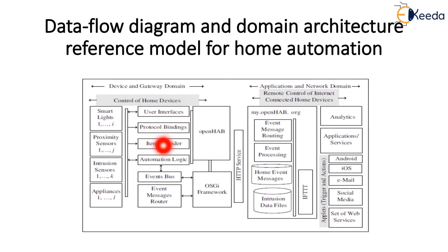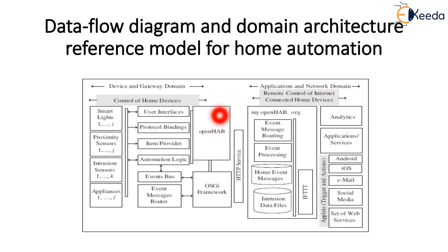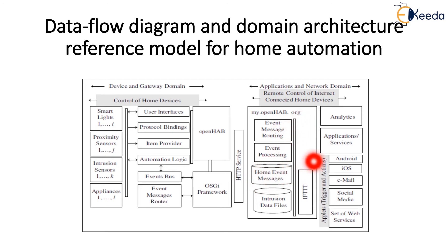The system has user interfaces, protocol bindings and item providers — all under the device and gateway domain. Home devices controlled include smart lights, proximity sensors, intrusion sensors and appliances, connected to the user interface, collecting data via the event bus and event message routers. Open Service Gateway Interconnect and OpenHAB use the home automation bus, connected to the applications and network layer. Remote control of internet-connected home devices is applicable using my.openhab.org, processing home events and intrusion data files with IFTTT. Analytics uses end-user applications with Android, iOS, email or social web, and a set of web services. Triggers and actions also take place.